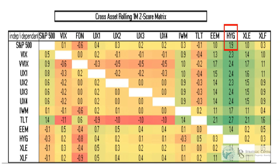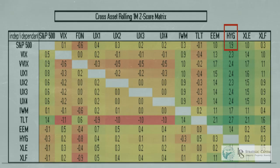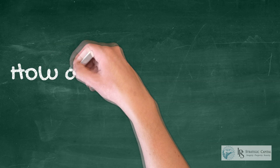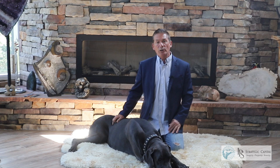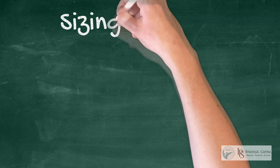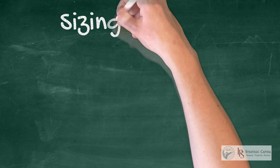So let's start by looking at a one-month rolling Z-score matrix on a list of correlated assets. We have an asset — let's say HYG, the high-yield bond ETF — is trading 1.9 Z-scores above its regression line compared to the S&P 500. So how can we trade that? How can we find edge in that situation? How do we calculate and put on a delta-neutral trade that is just going to play the relative mean reversion? Well, here's where delta-dollars comes in.